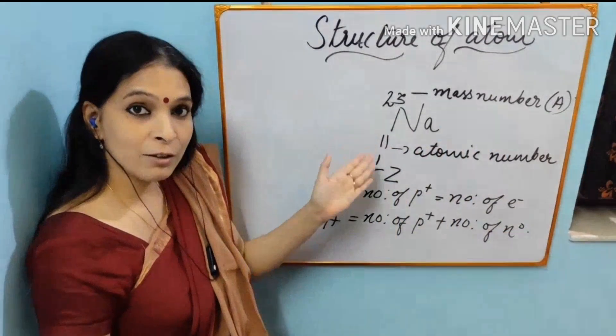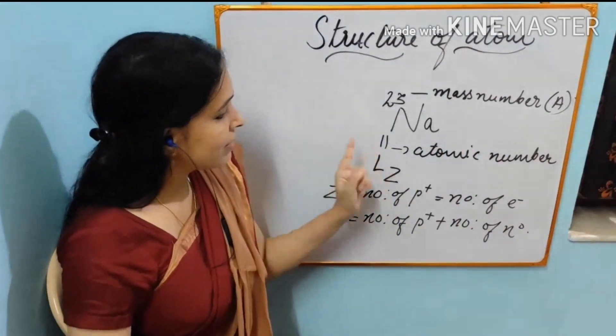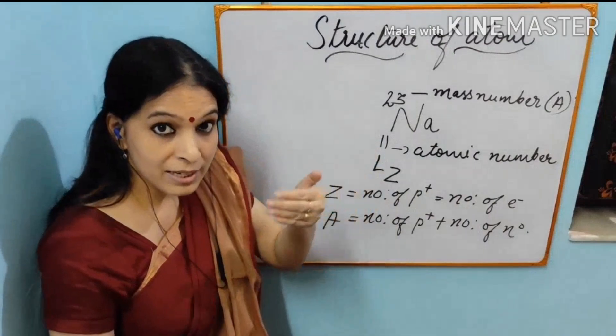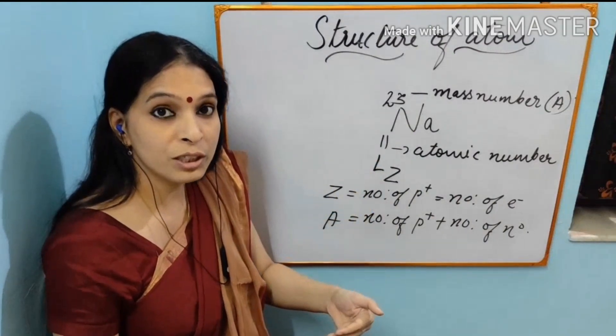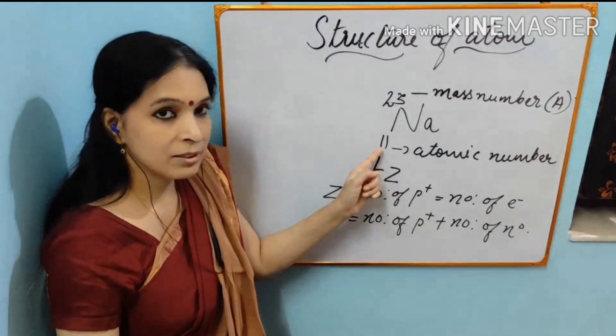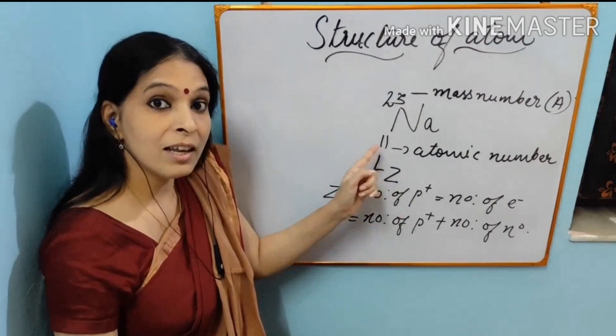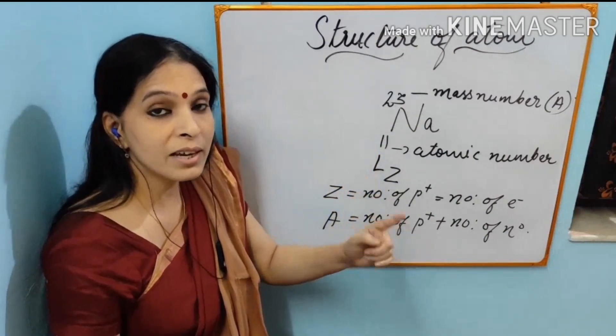That means from here we can understand 11 is the atomic number. That means inside the nucleus of sodium, 11 protons are there and 11 electrons are there outside revolving.